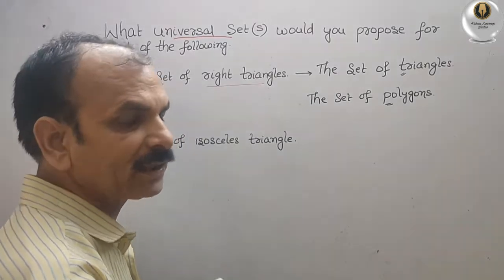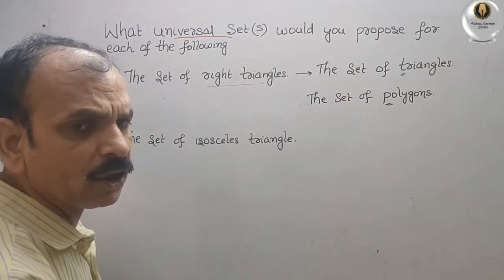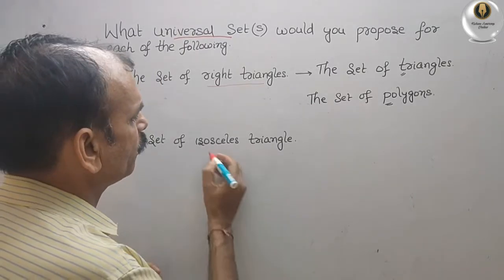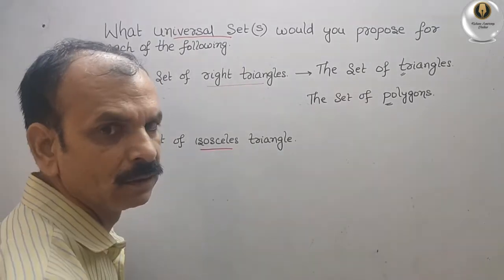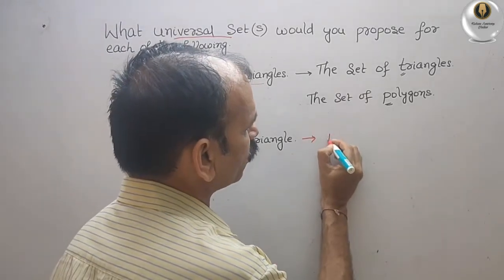Now see the second one. The set of isosceles triangle. Here also they have given one type of triangle isosceles. So we can go for the same thing, that is the set of triangles.